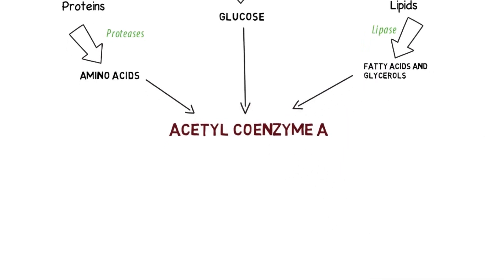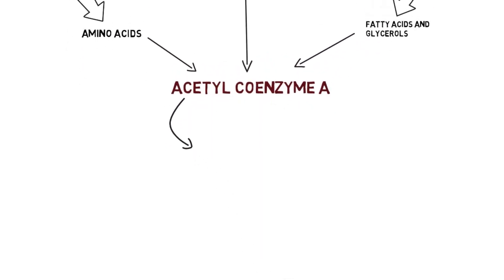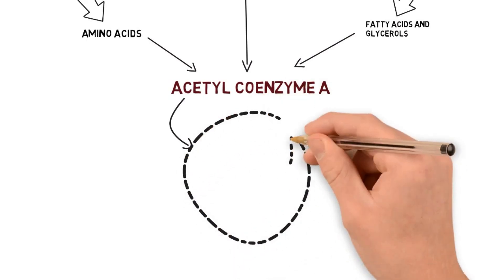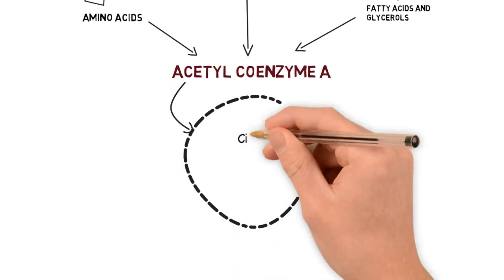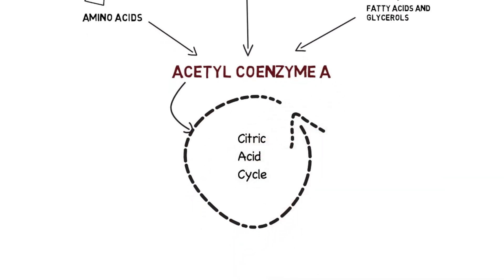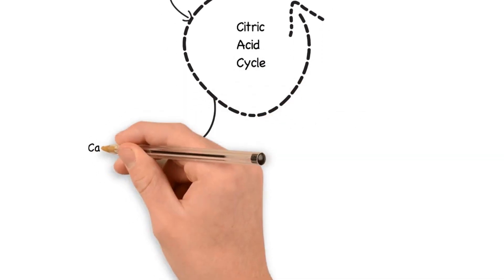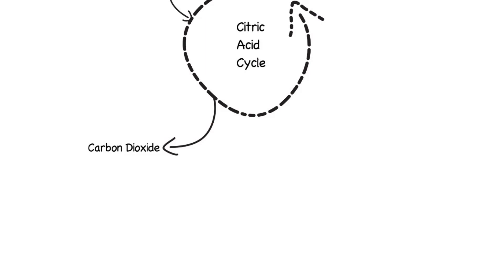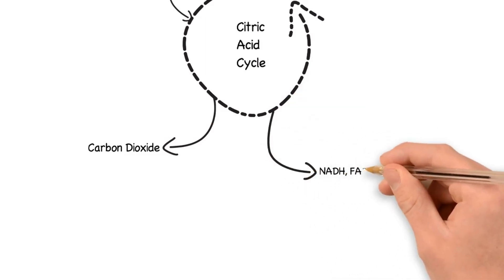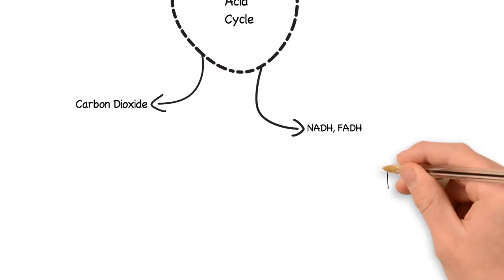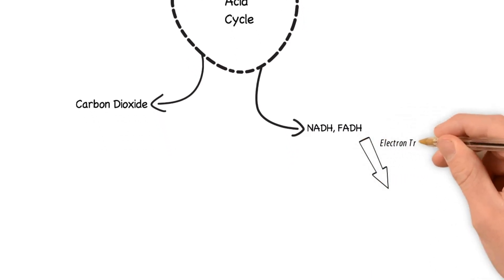Now, these acetyl coenzyme A undergoes oxidation in the citric acid cycle to form carbon dioxide and also produce reducing equivalents like NADH and FADH2 which later entered the electron transport chain for biological oxidation and produce ATP.